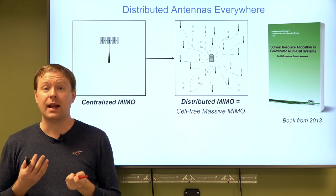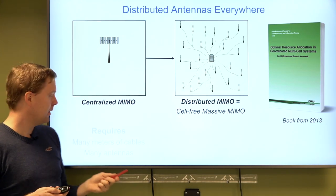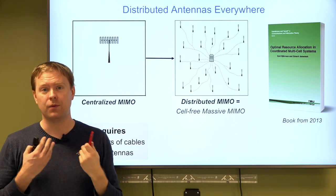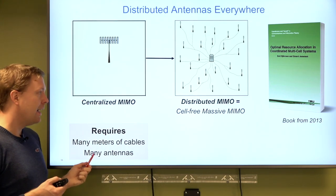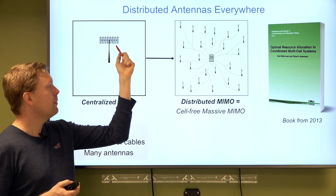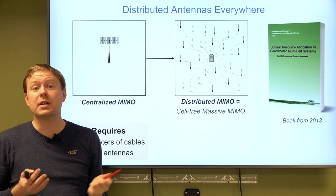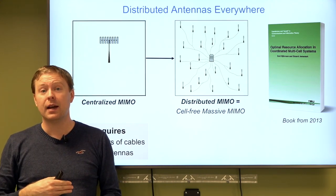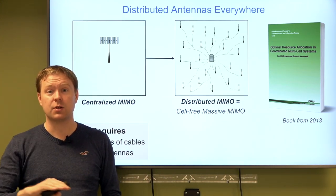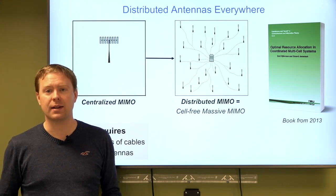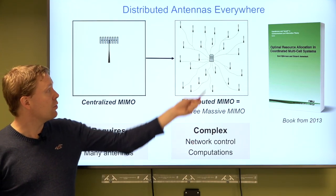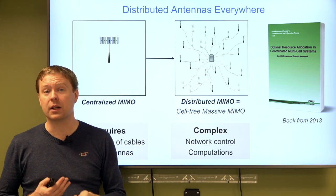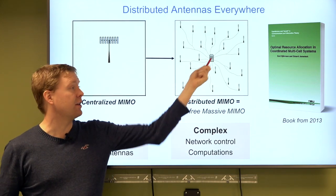This idea has been studied for a decade or more — I wrote a book in 2013 about how to do it optimally in theory. But doing it well in practice is another matter. The problem is you have a lot of meters of cable — our friends at Ericsson call it a 'spaghetti monster'. You also need more antennas than in the centralized case, because base stations in towers can see over obstacles, while distributed antennas at street level cannot. Additional complications arise around complexity: how you control the system, the latency of collecting signals at one place, and the computation load at a central unit.